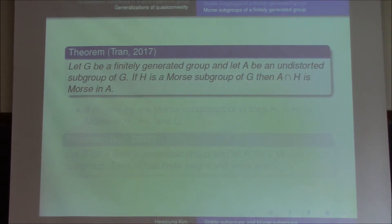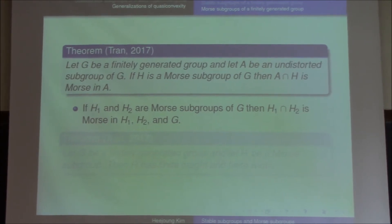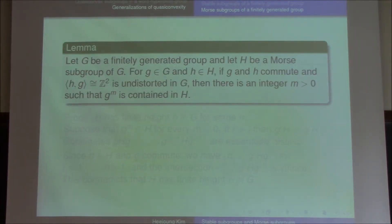Let's discuss some properties of Morse subgroups. Let G be a finitely generated group and A an undistorted subgroup. Then if H is a Morse subgroup, the intersection of A and H is Morse in A. In particular, if A is another Morse subgroup, then the intersection of H1 and H2 is Morse in H1 and H2. Since a Morse subgroup is undistorted, the intersection is also Morse in G. Also, a Morse subgroup has finite height and finite width.